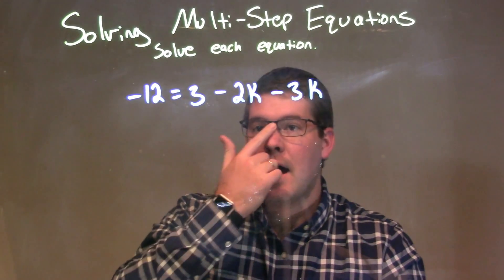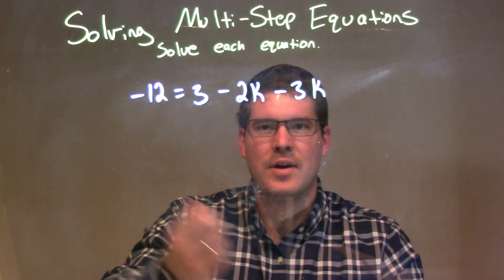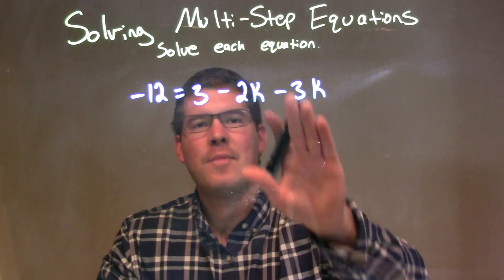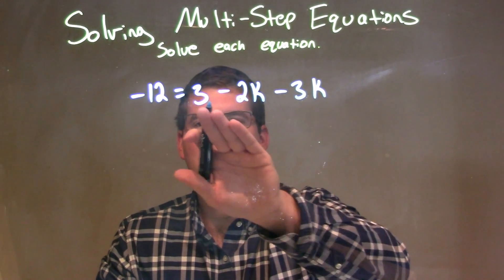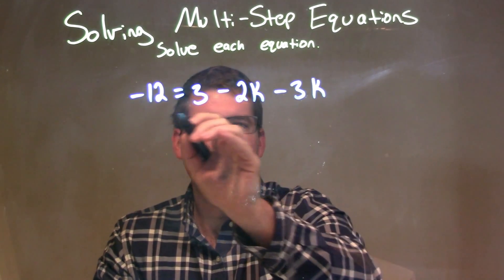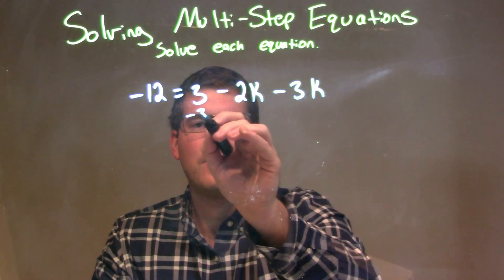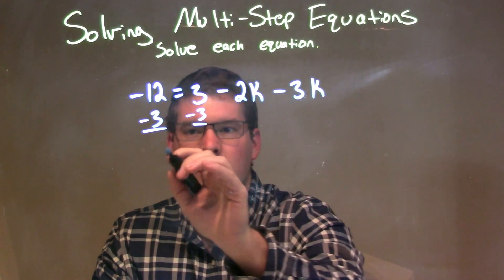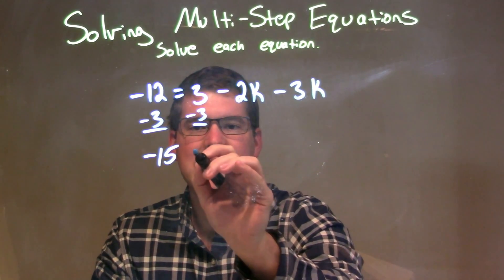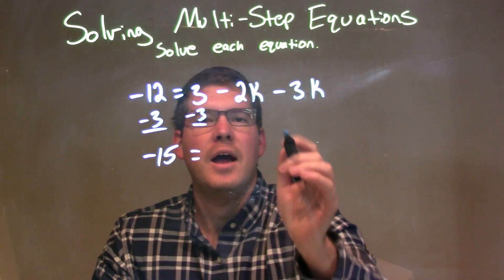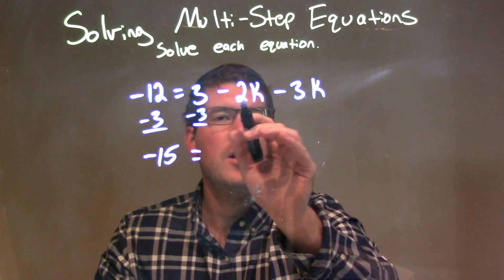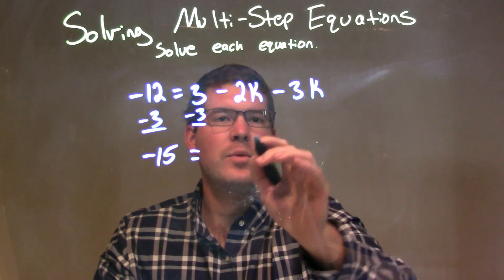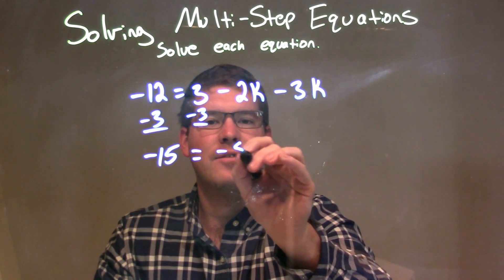What I want to do is bring my like terms together and combine my like terms on each side. I have my variables on the right, and a number on the left, so I'm going to bring that number over and subtract 3 from both sides. Negative 12 minus 3 is negative 15, and we can combine the two variable terms: negative 2k minus 3k is negative 5k.